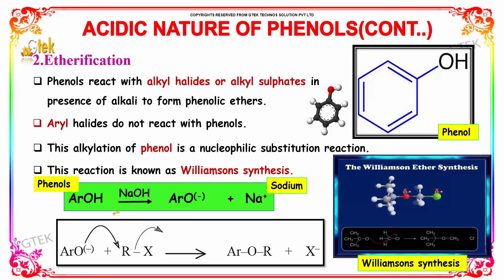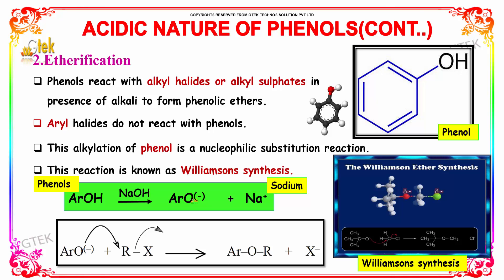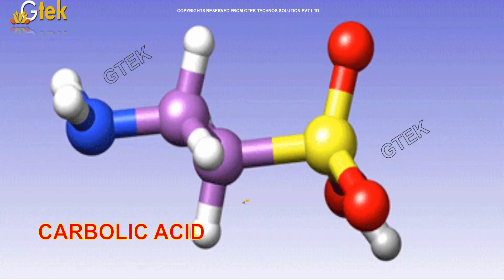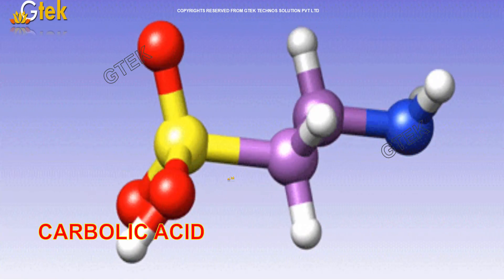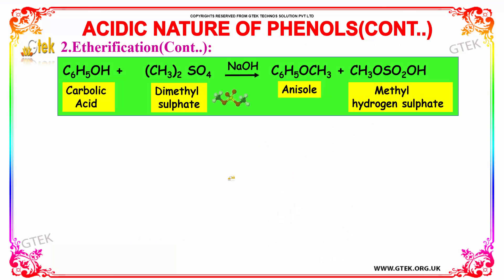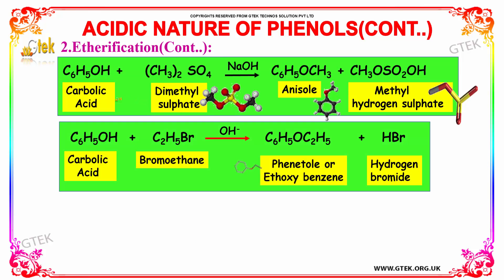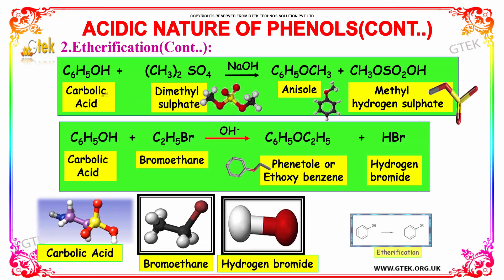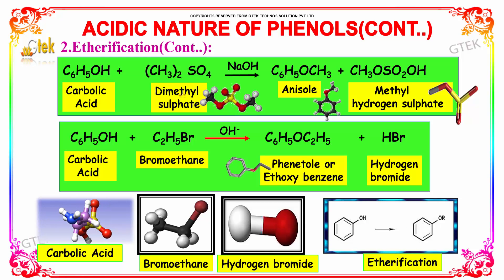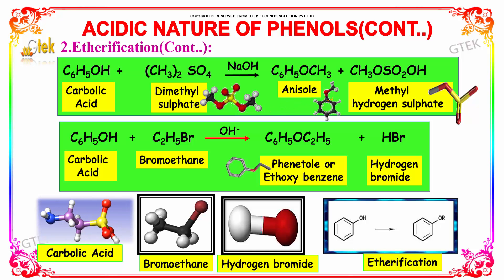As an example of Williamson synthesis, aromatic ArOH reacts in the presence of NaOH to produce ArO⁻ along with a sodium ion. When carbolic acid reacts with dimethyl sulfate in the presence of sodium hydroxide, it forms anisole along with methyl hydrogen sulfate.